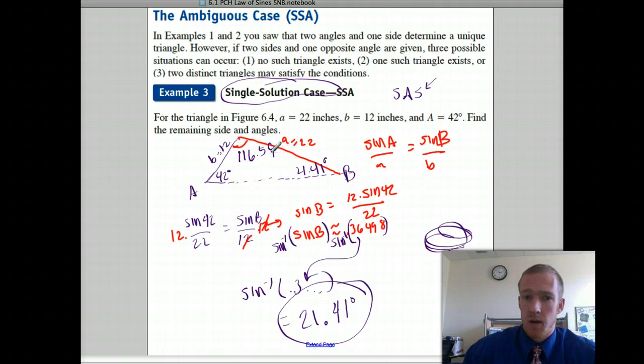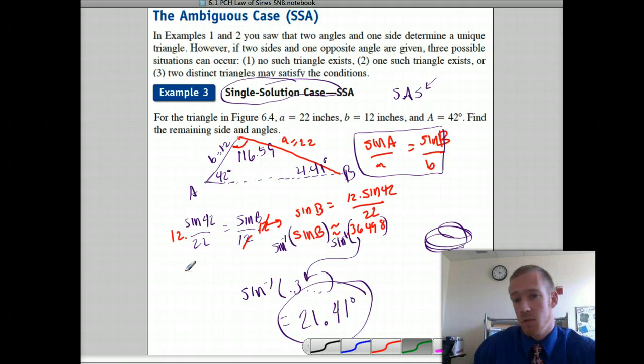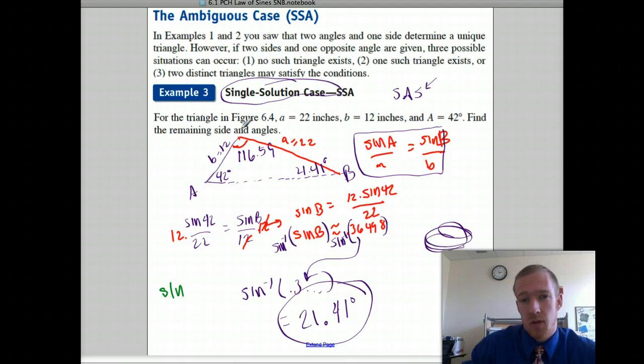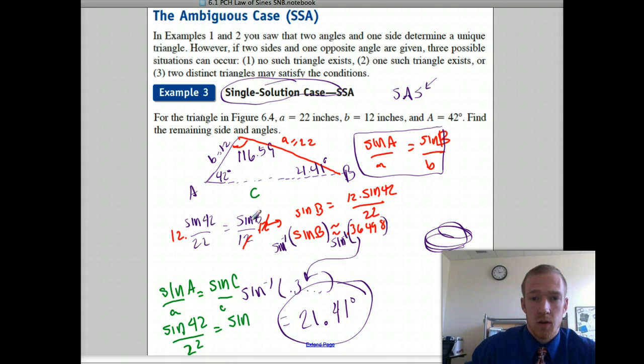And then we can also set up one of these and solve for our third side. Alright, I'm not going to do it but I'll just show you how you would set it up. You could use, don't use any of your rounded values if you can help it. So we're going to use sine of A over A equals sine of C over C, so that gives us sine of 42 over 22 equals sine of angle C, 116.59, over side C. Cross multiply and solve for C.